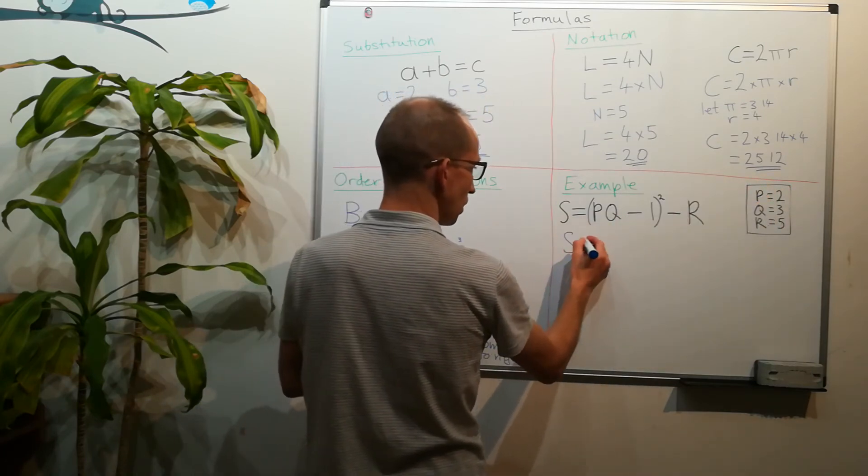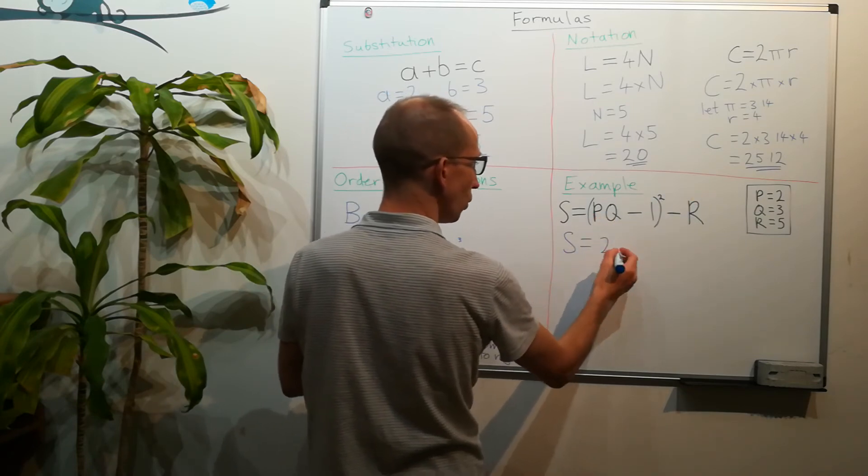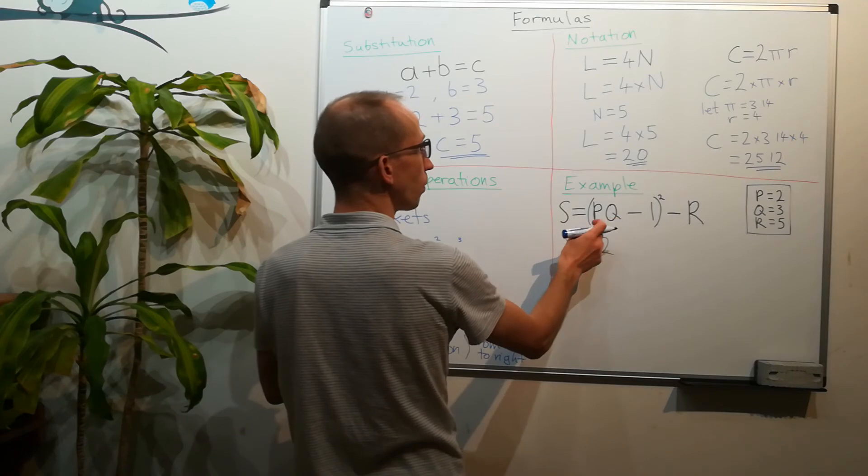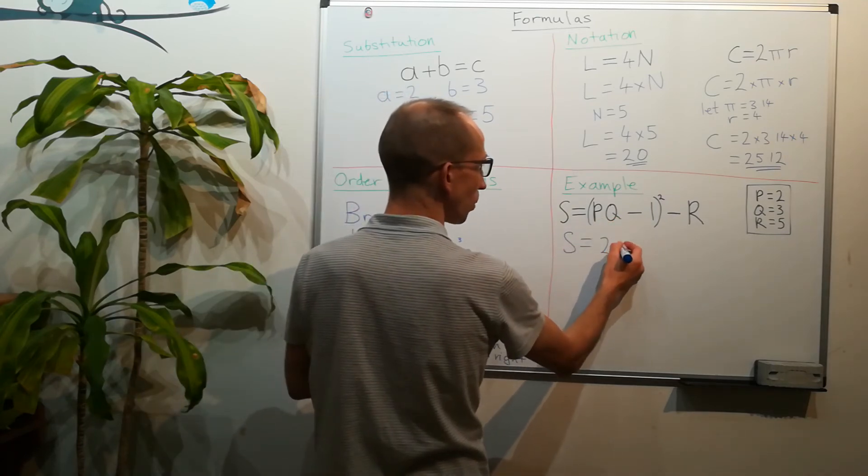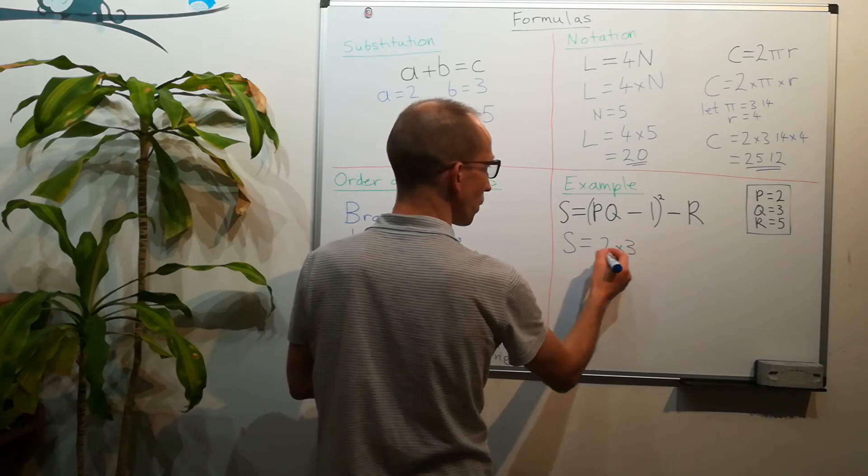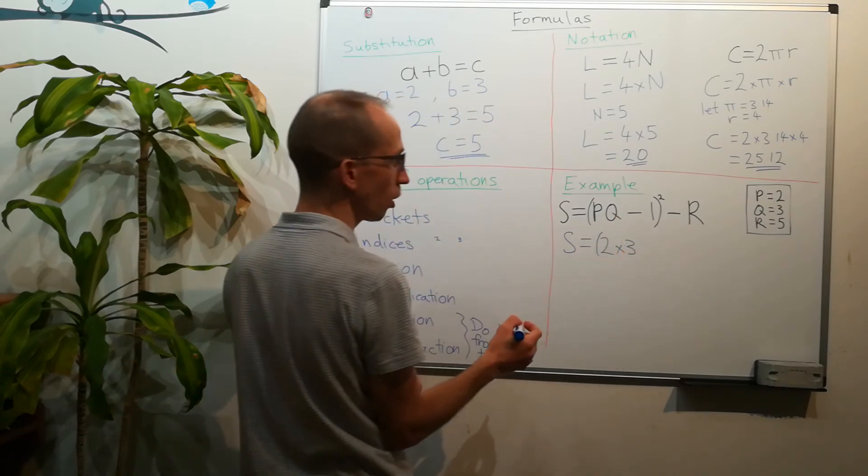So s is equal to, so instead of p and q I've got 2 and 3. And remember when we've got two letters together or a number and a letter, it means that we multiply them. So we've got 2 times 3, we've still got the open brackets.